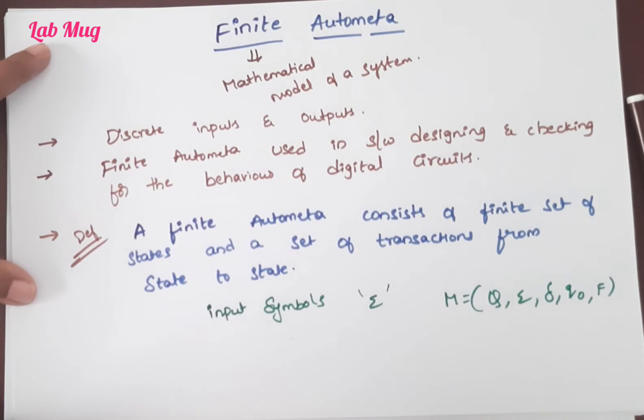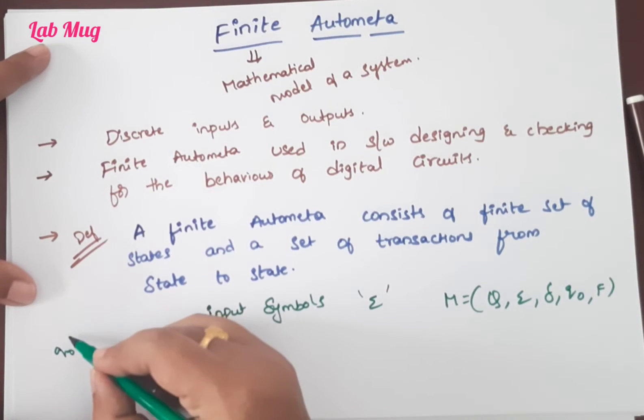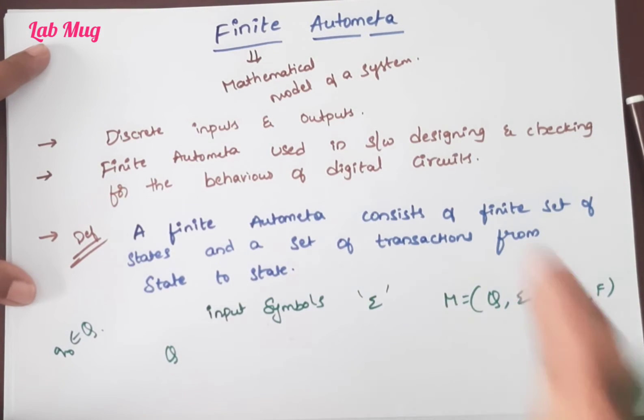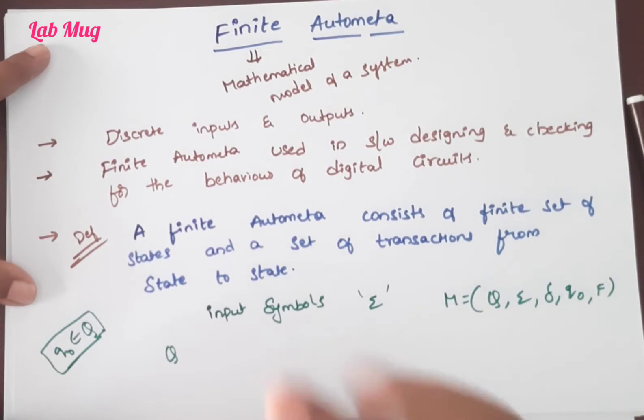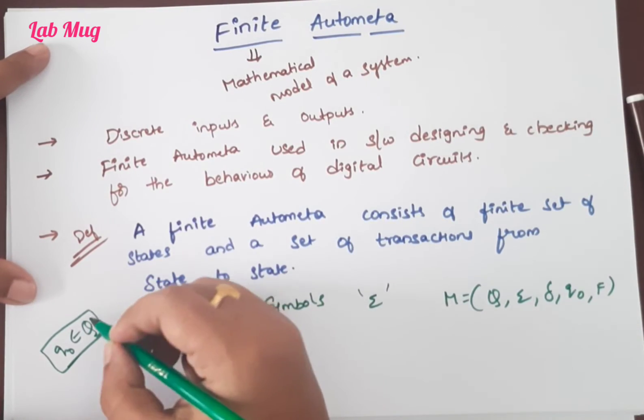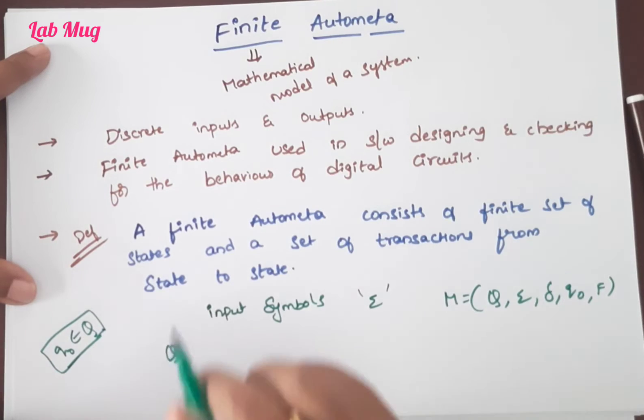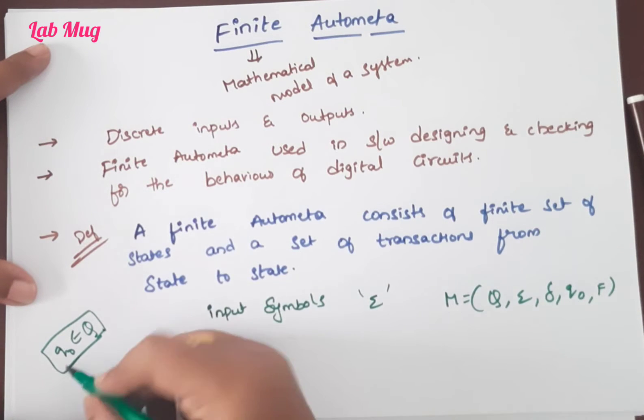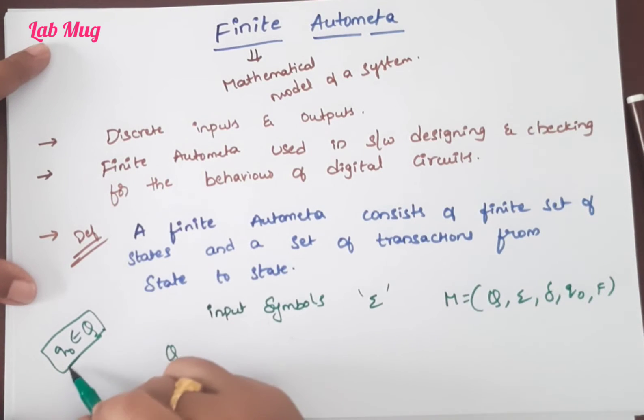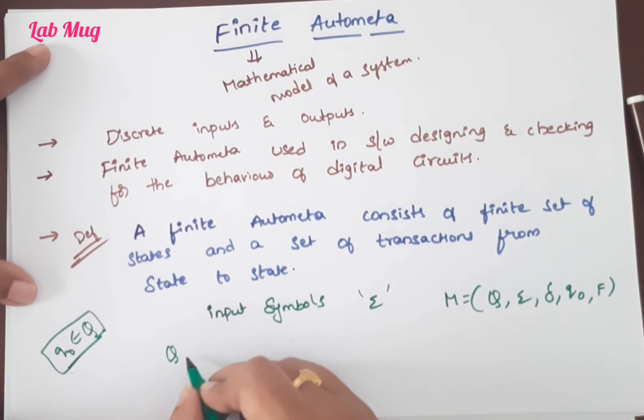First of all, Q represents the finite set of states - we represent total states as Q. For example, q₀ is one state. Q₀ belongs to Q, meaning Q is the finite set of states. You need to understand the terminology: q₀ belongs to Q. For example, if Q is {1, 2, 3, 4, 5}, then 1 belongs to the set {1, 2, 3, 4, 5}. So q₀ is one of the states from Q. Q₀ belongs to Q means we take q₀ from the set of states Q.